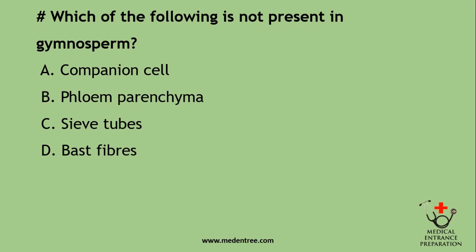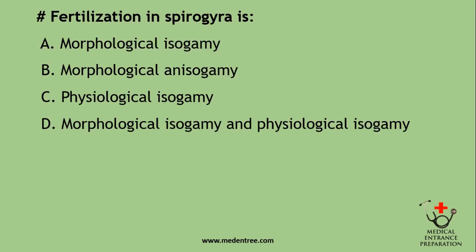Which of the following is not present in gymnosperms? Companion cell, phloem, parenchyma, sieve tubes, or bast fibers? The key difference between gymnosperms and angiosperms is the presence of companion cells — gymnosperms lack them.